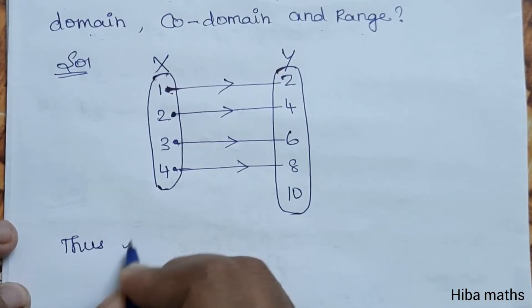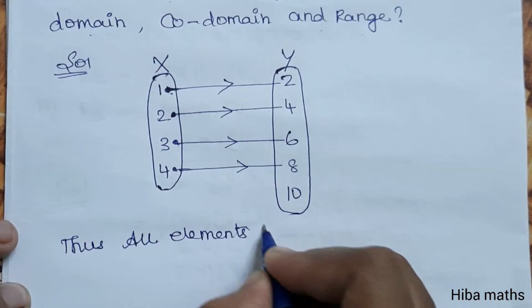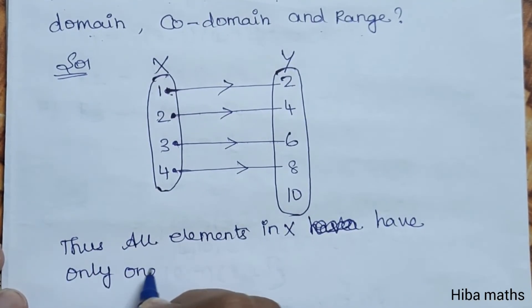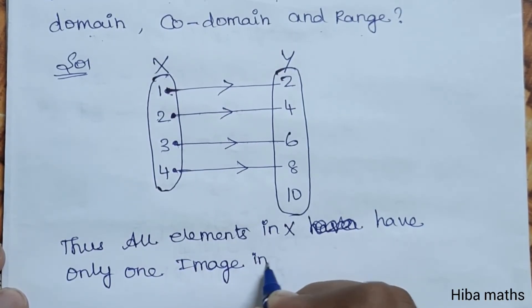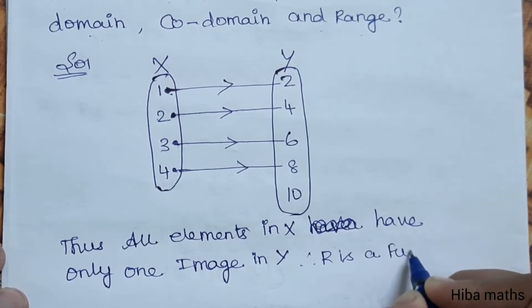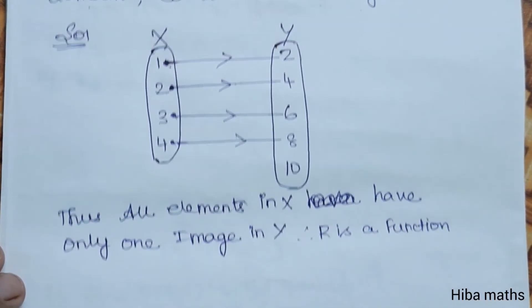Thus, all elements in X have only one image in Y. Therefore, R is a function.